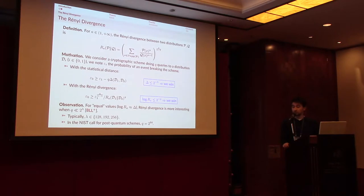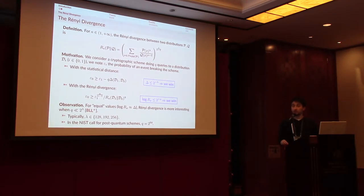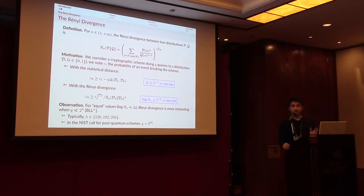The definition of the Rényi divergence is given here. For A in (1, +∞), the Rényi divergence of two distributions P and Q is the sum over x in the support of P, of P(x)^A over Q(x)^(A−1), all raised to the power of 1/(A−1). It is actually defined for all values of A, but since the behavior of the Rényi divergence is qualitatively different when its order is bounded, I will only consider this range.